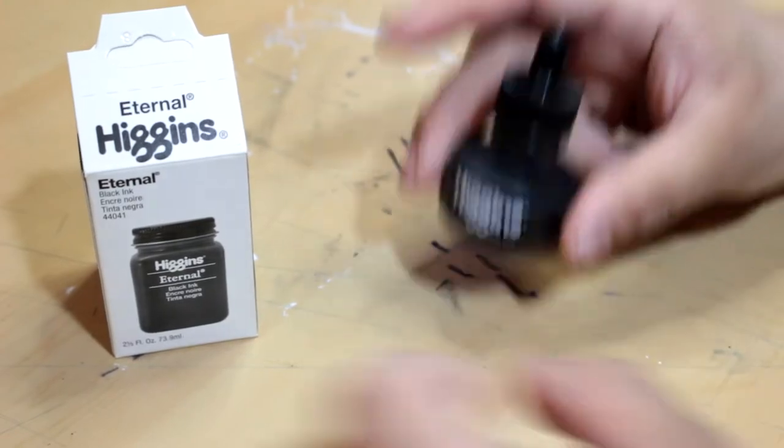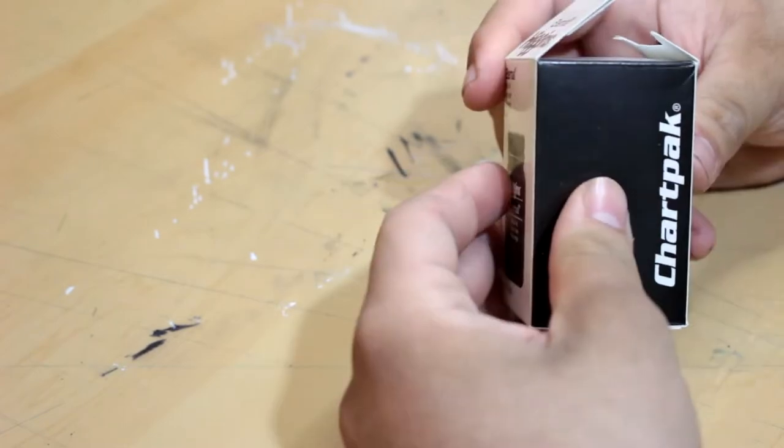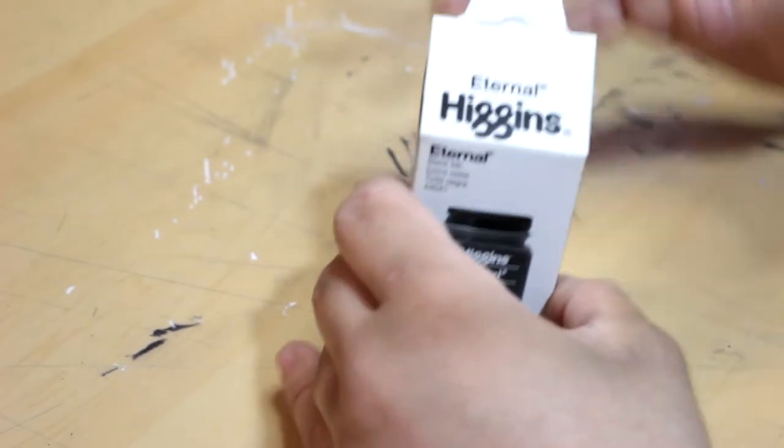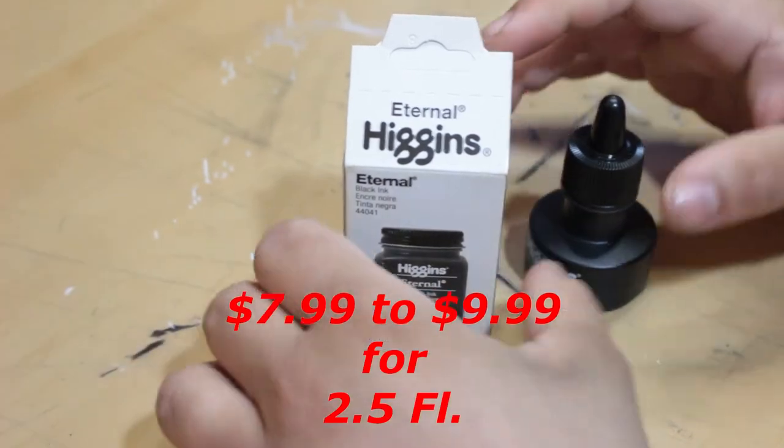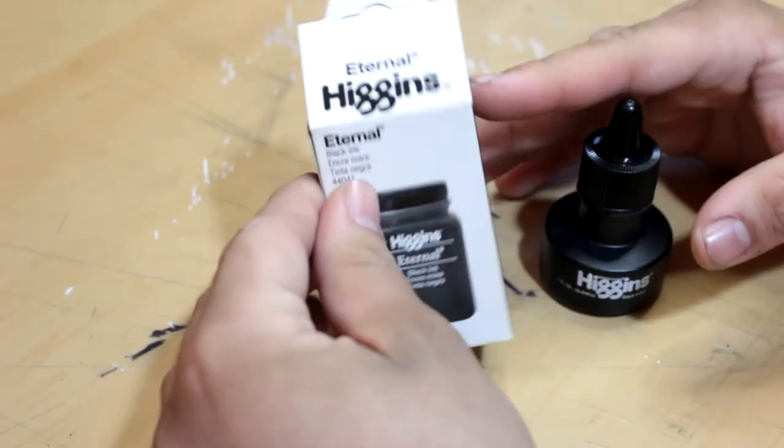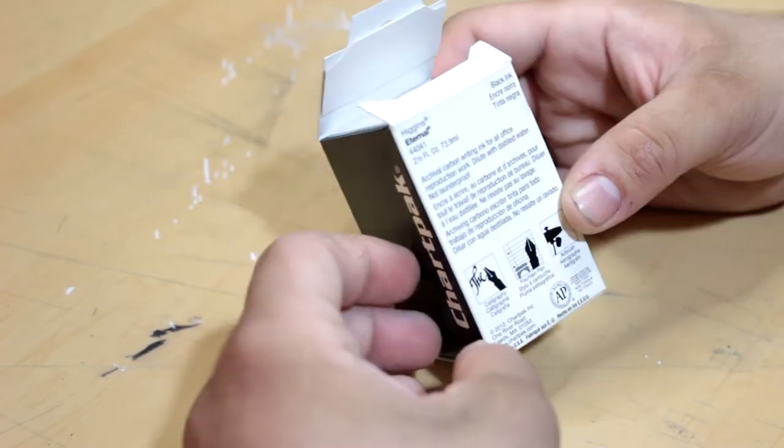We're actually going to be revisiting this specific drawing ink as I have learned the Higgins trick. But I figured in the meantime we should take a look at Higgins Eternal. What's really interesting about this is that it's the same price as the drawing ink, you know $7.99 to $9.99 depending where you go. Instead of getting one fluid ounce you get two and a half fluid ounces.